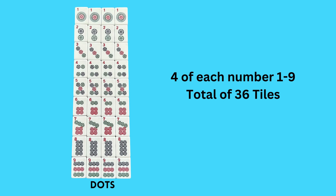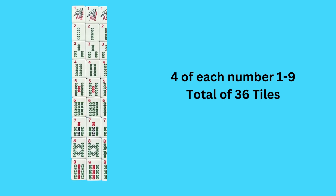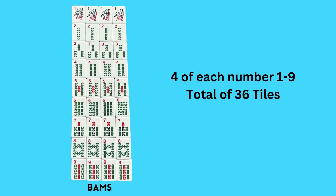Then we move on to the bams, the last of the three suits. If you look at the bams, you will notice that the design looks very much like a bamboo stalk, and the primary color is green. There are four of these, totaling 36 as well. Now let's take a closer look at the one bam.